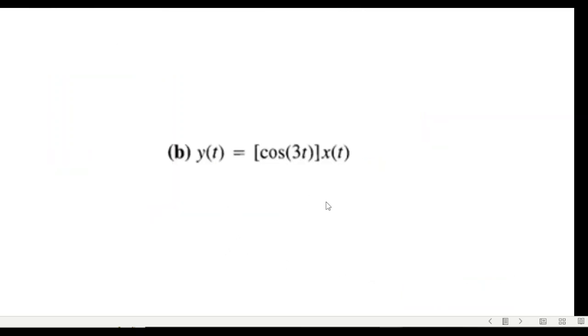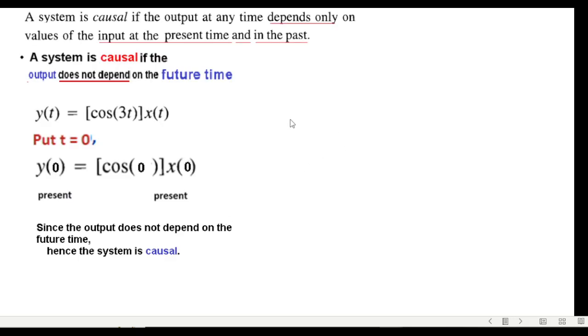Okay, the next example you follow similar technique. Put t equals zero, so y(0) equals cos(0)x(0). Now cos(0) is 1, and so we can see that this is also present. y(t) or y(0) output is in the present time and also x(0) is in the present time. And therefore the system is causal.